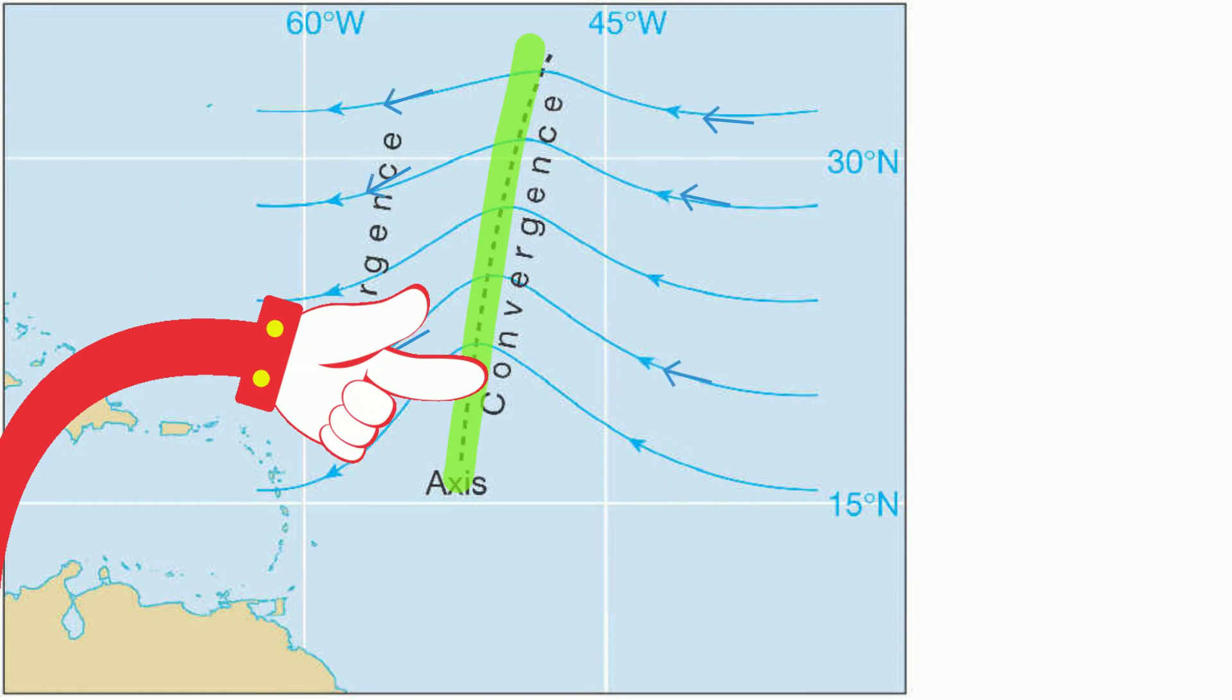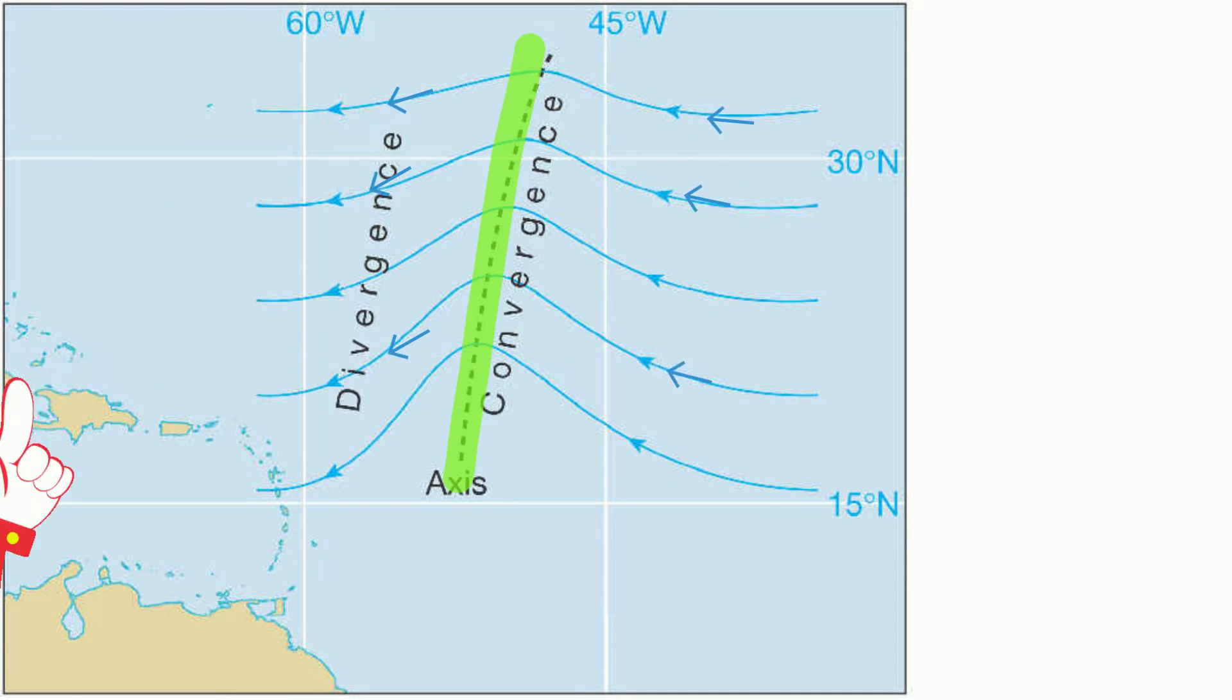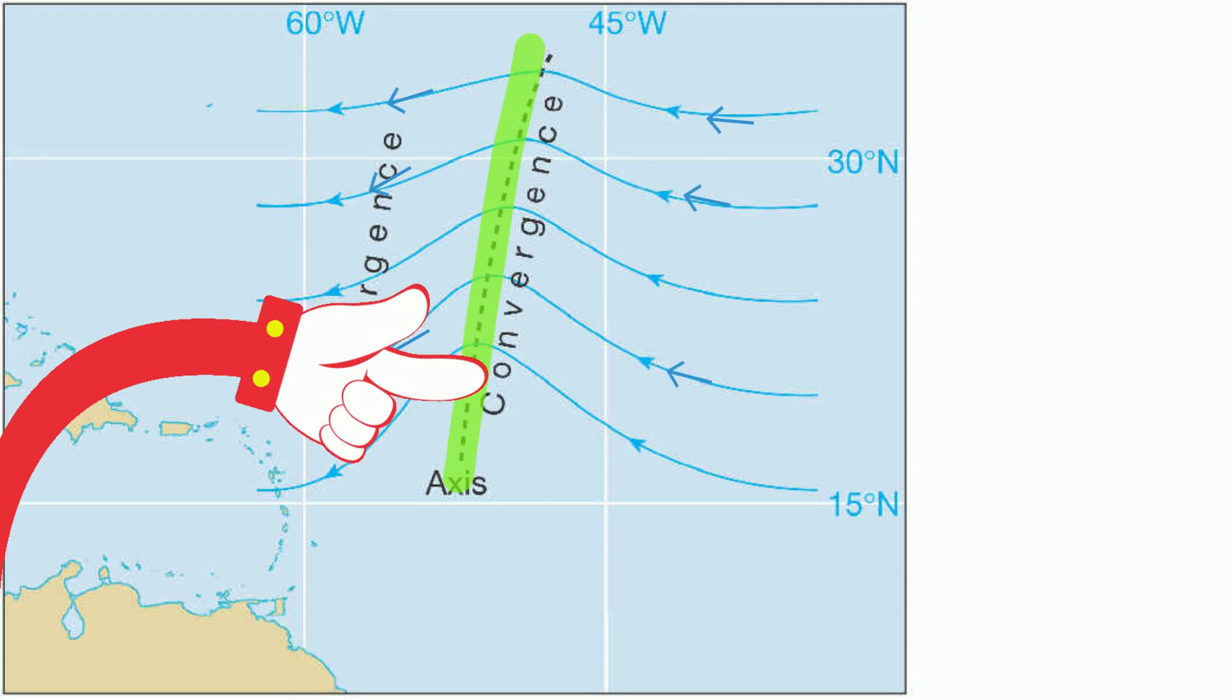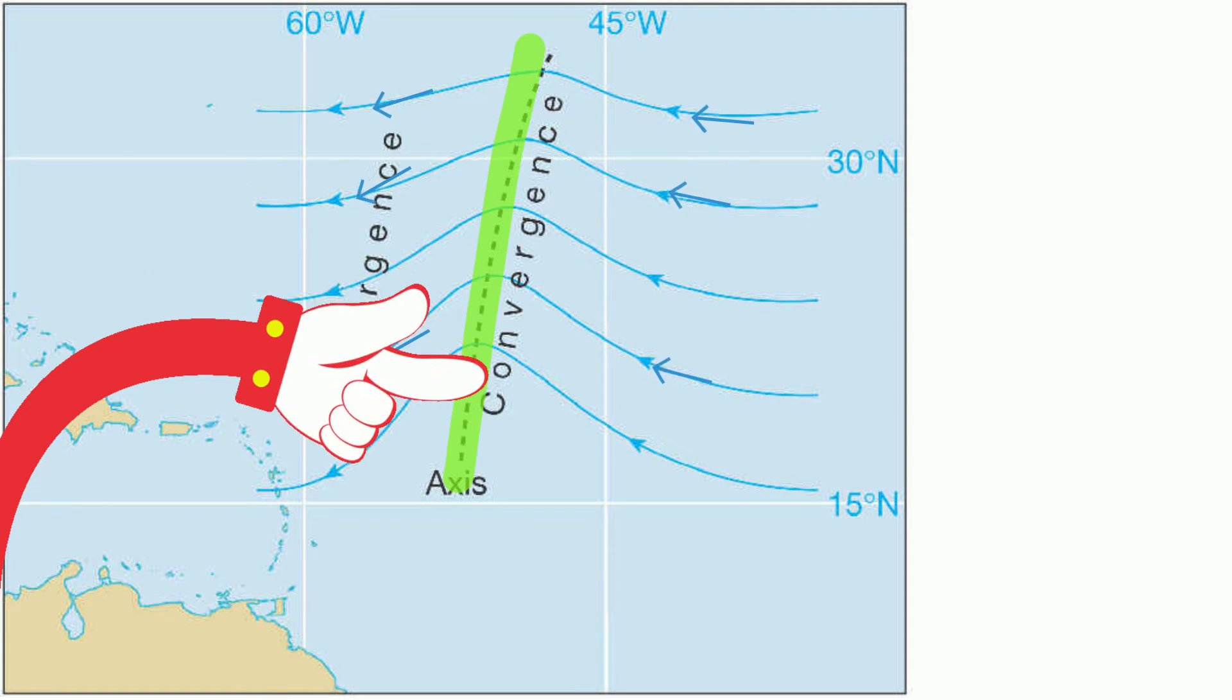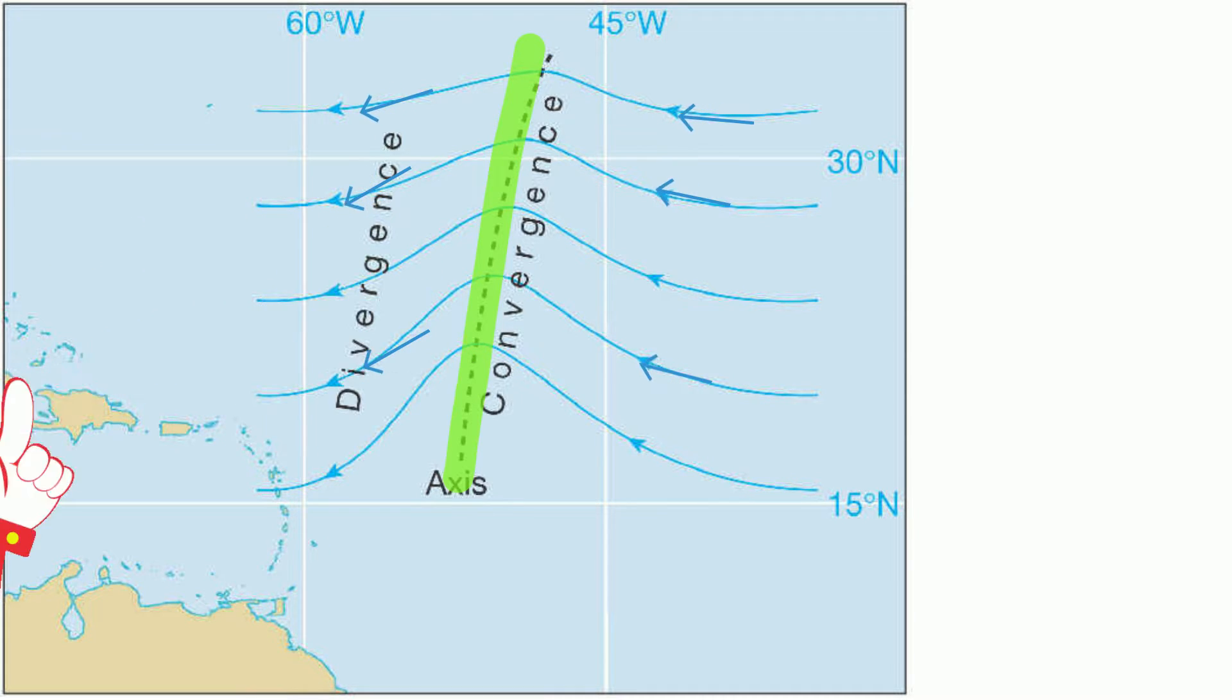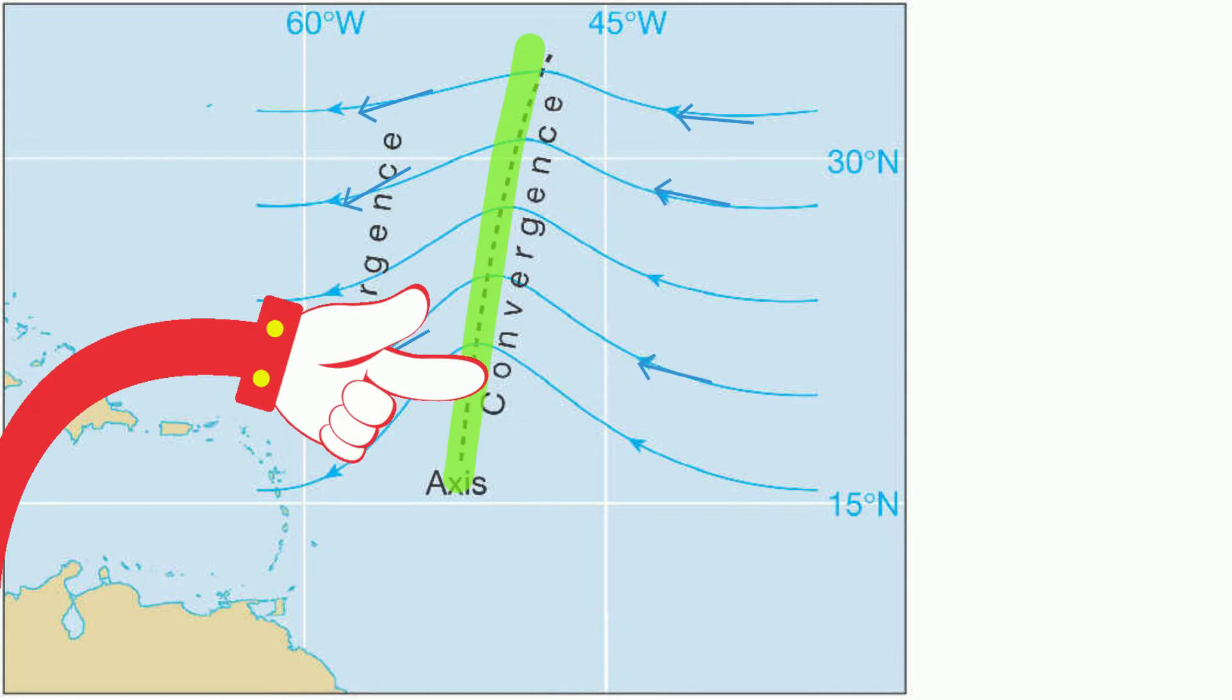As the trough passes, the air becomes very unstable. Air pressure is reduced, so the air rises vigorously.